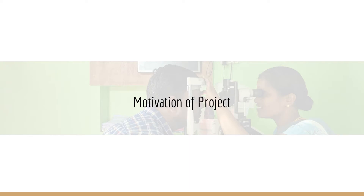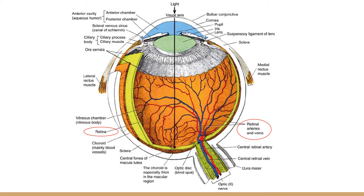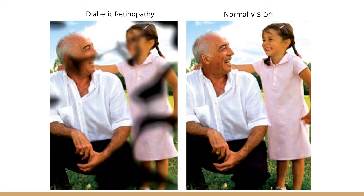Diabetic retinopathy is a serious sight-threatening complication that may occur in people who have diabetes. It causes progressive damage to the retina, and with approximately 1 in 10 adults in the world living with diabetes, 1 out of 3 have some degree of diabetic retinopathy. This gradual loss in vision will lead to blindness, yet there are no symptoms in its early stages to take precautions.